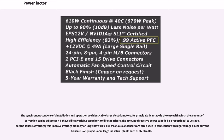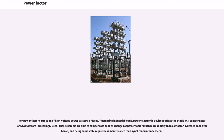The synchronous condenser is started and connected to the electrical network. It operates at a leading power factor and puts VARs onto the network as required to support a system's voltage or to maintain the system power factor at a specified level. The synchronous condenser's installation and operation are identical to large electric motors. Its principal advantage is the ease with which the amount of correction can be adjusted — it behaves like a variable capacitor. Unlike capacitors, the amount of reactive power supplied is proportional to voltage, not the square of voltage, which improves voltage stability on large networks. Synchronous condensers are often used with high voltage direct current transmission projects or in large industrial plants such as steel mills. For large fluctuating industrial loads, power electronic devices such as the static VAR compensator or STATCOM are increasingly used, as they can compensate sudden changes of power factor much more rapidly than contactor-switched capacitor banks, and being solid state, require less maintenance than synchronous condensers.